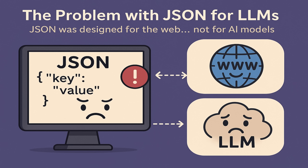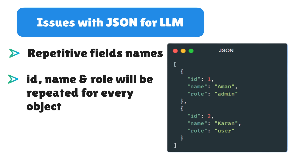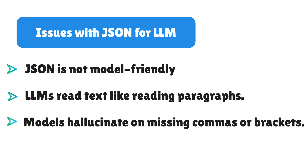JSON was designed for the web, not for AI models. For LLMs, JSON has three major issues. First, JSON is too verbose — too many braces, quotes, and commas. In a typical JSON payload, all those braces, quotes, commas, and new lines act as separate tokens. For LLMs, every additional token results in extra cost and slower responses. The second issue is repetitive field names: every field name is repeated again and again, which LLMs don't need but JSON forces. This results in unnecessary extra tokens. The third issue is that JSON is not model-friendly. LLMs read text the way we read paragraphs, and JSON's nested brace structure is not natural for them. Models often hallucinate if a comma or bracket is missing — a single mistake can break the whole format. While JSON is great for APIs, it is not ideal for token-efficient AI communication.